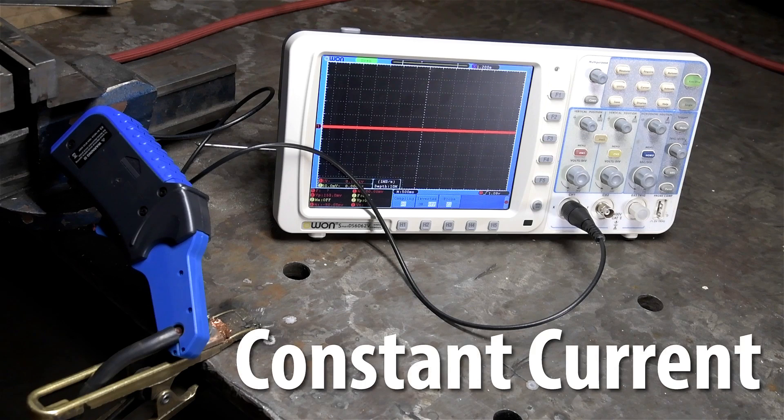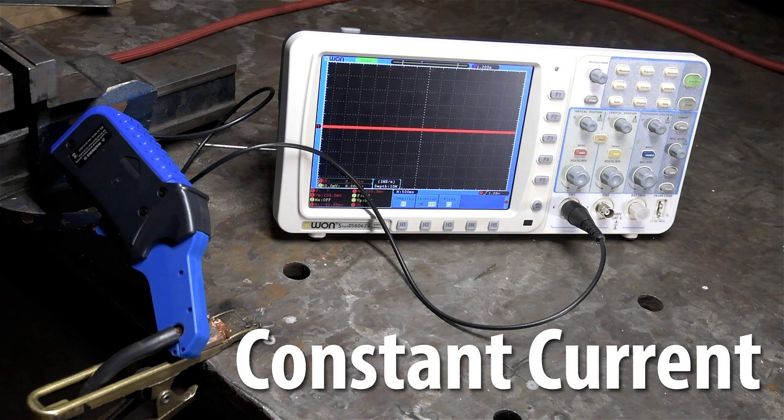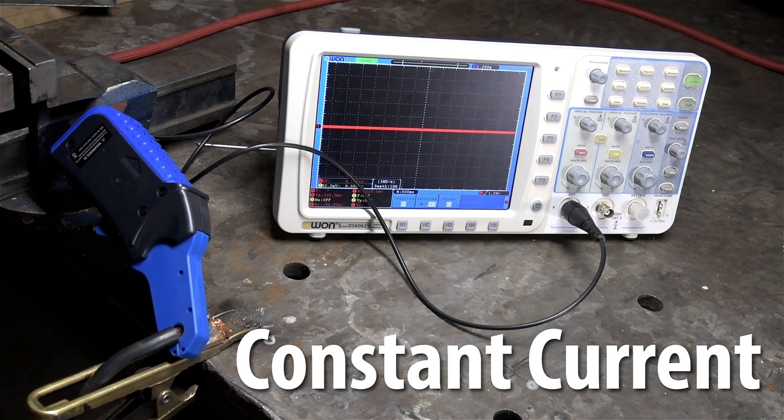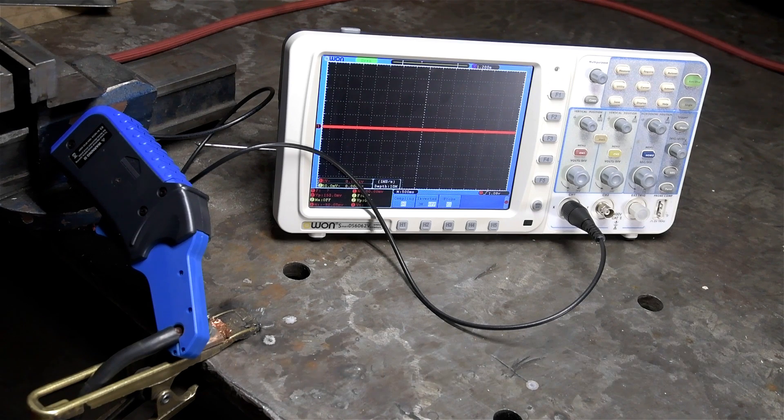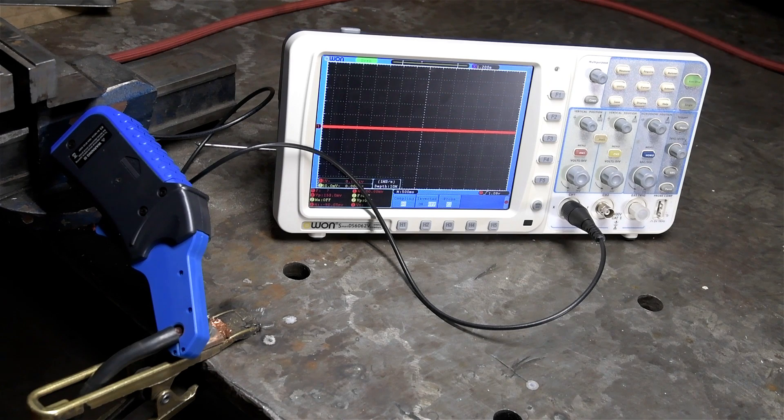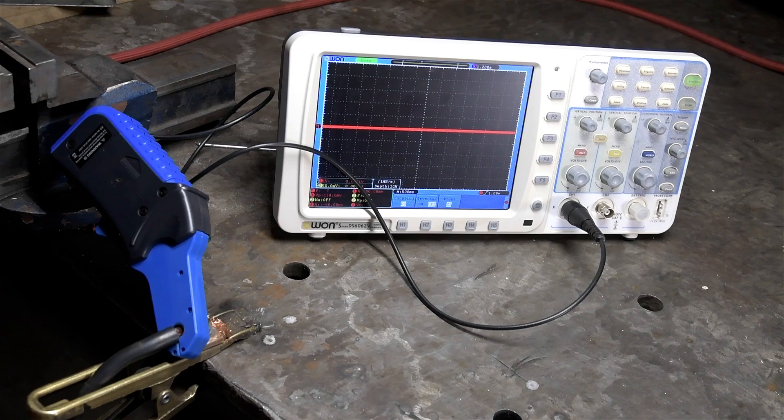TIG welders are constant current power supplies. That means they'll constantly put out the current you set the machine to, and they'll adjust their voltage in order to do that. So while Mr. Old Shaky Hands here is running a weld bead, and the arc gap is moving up and down all over the place, the welder adjusts the voltage of that arc in order to maintain the current I set on the machine. MIG welders, on the other hand, are just the opposite. They're constant voltage, and the machine itself adjusts the current in that case to keep it constant voltage.